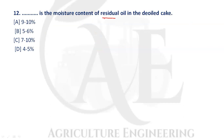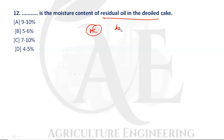Next question: what is the moisture content of the residual oil in dill cake? The moisture content of dill cake is four to five percent.